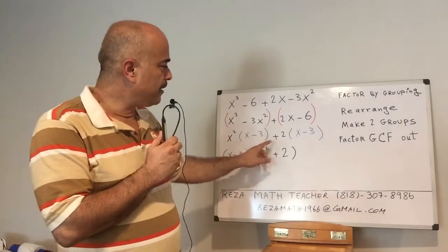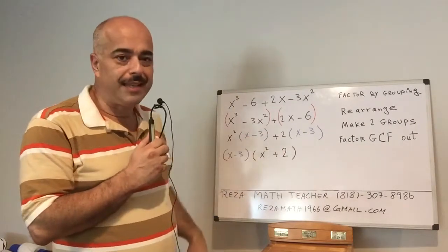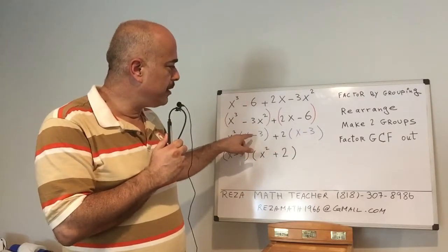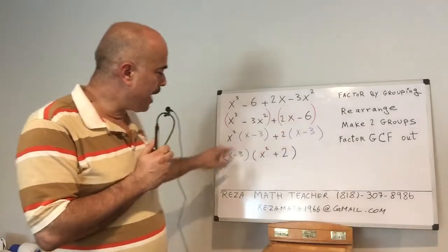After that, you look at (x - 3) and (x - 3). For the second time, you have to factor the common part. (x - 3) is common, so you have to take it out.